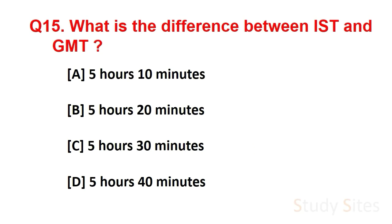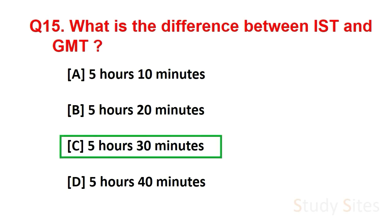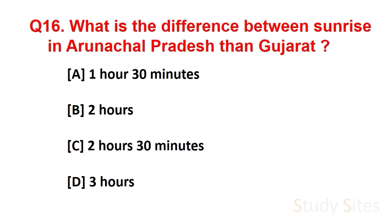Question number 15. What is the difference between IST and GMT? Answer is 5 hours and 30 minutes. Question number 16. What is the difference between sunrise in Arunachal Pradesh and Gujarat? Answer is 2 hours.